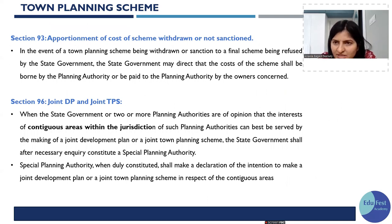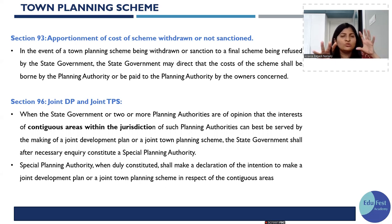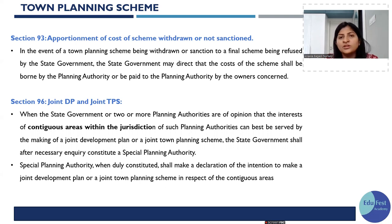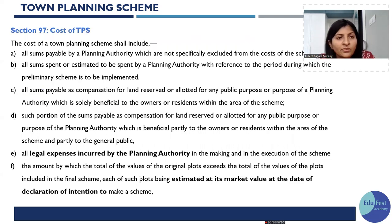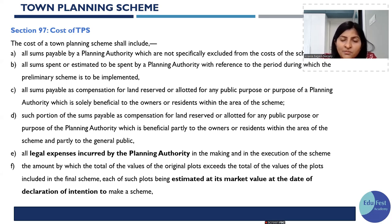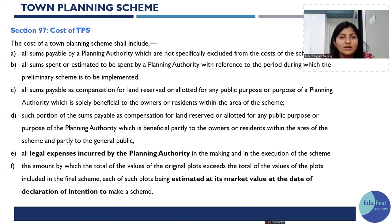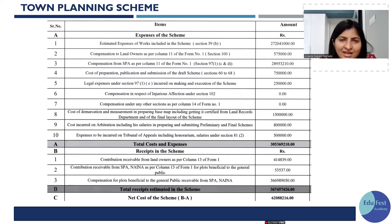The next topic is joint DP and joint DP scheme. Section 97 is the most important section regarding the cost of the scheme — it includes the planning authority's legal expenses, payable compensation for land reserved wholly or partly, legal expenses, and whatever the total value of the original plot over the final plot exceeds. All of this has to be included in the cost of the TP scheme.